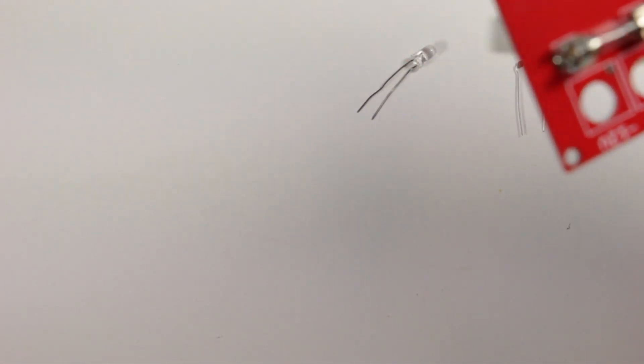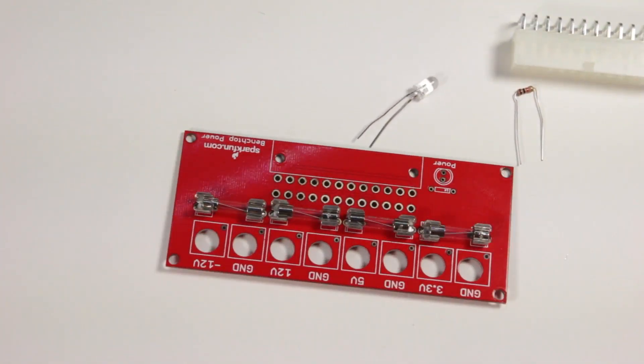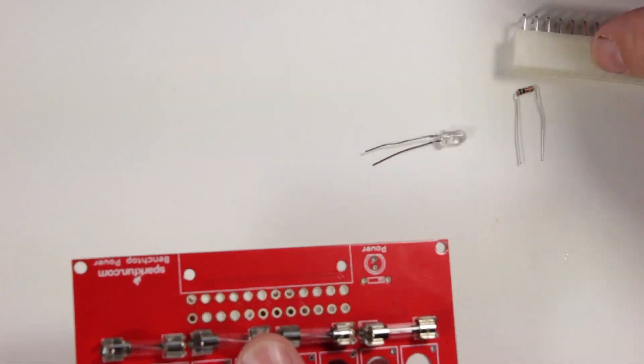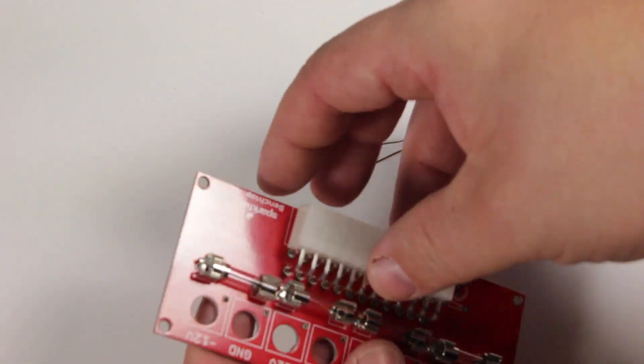Now that the fuses are soldered on, let's move on to the 24-pin Molex connector. The connector easily clips onto the circuit board and is firmly held in place by two little plastic clips.